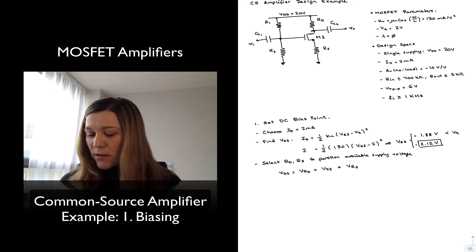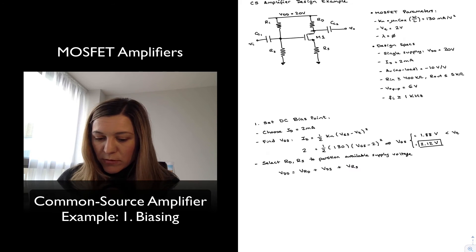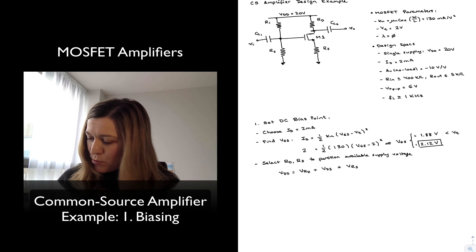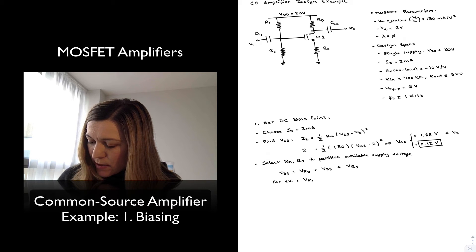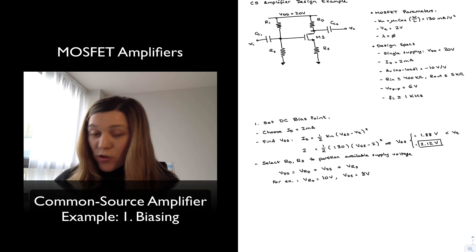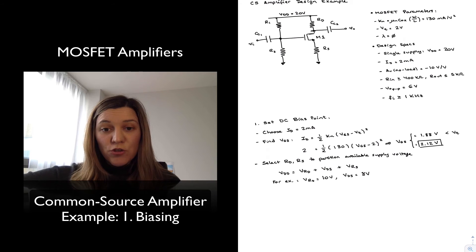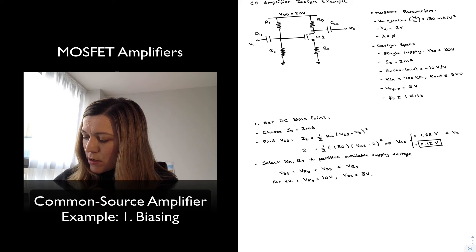I'm actually going to go ahead and give it 10 volts. For example, I'm going to say VRD is equal to 10 volts, VDS is equal to 8 volts so that it allows for that output voltage to swing in the negative direction without my transistor going into saturation, and VRS will be 2 volts.